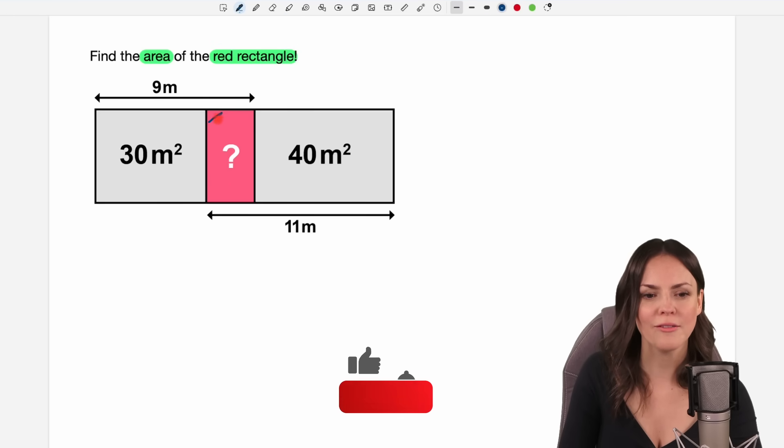Okay, so we have to find the area of this rectangle here. We get the area of this left rectangle and the area of this right rectangle and the length of this part here and the length of this part here.